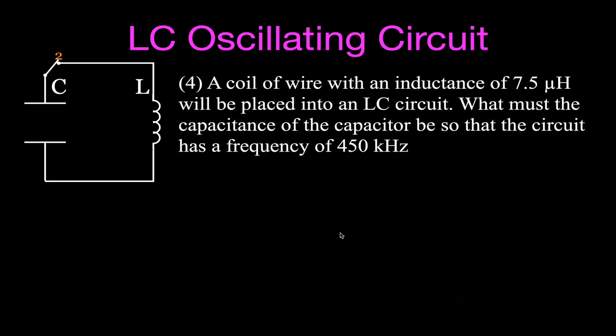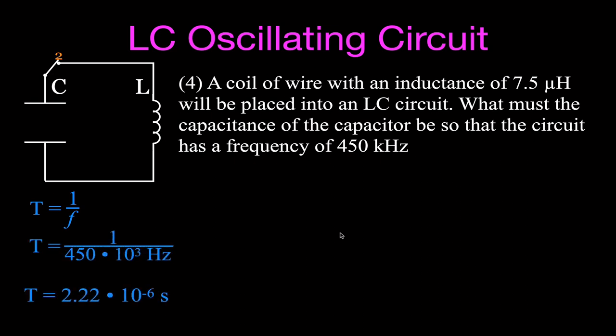For number four, we have a coil with an inductance of 7.5 microhenries placed in an LC circuit, and we want to know what capacitance is needed for a frequency of 450 kilohertz. I'll first convert frequency to period: T = 1/f = 1/(450×10³) = 2.22×10⁻⁶ seconds. You could alternatively use f = 1/(2π√(LC)) directly, but I'll use the period approach.